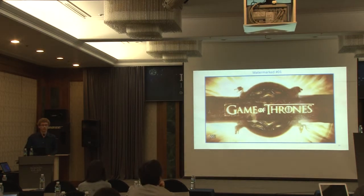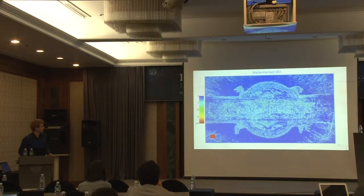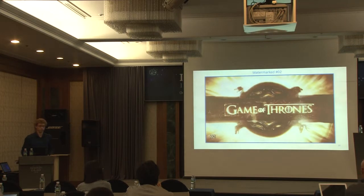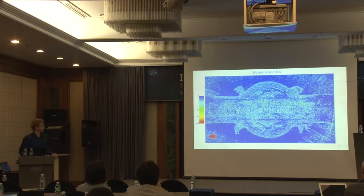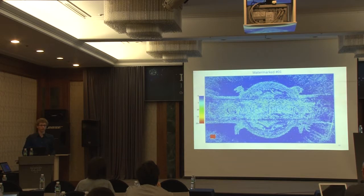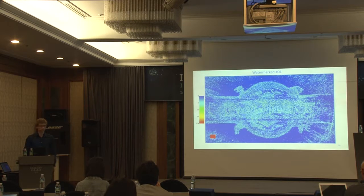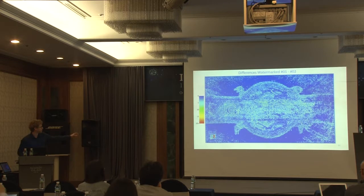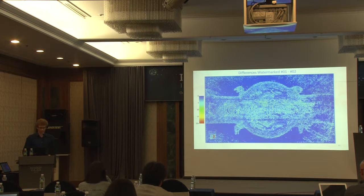Moreover, if we have watermark number 01, we have certain compression artifacts. And if we have watermark number 02, we have, again, certain compression artifacts. But these compression artifacts are different. So each unique visible watermark will create a unique alternative watermark as compression artifacts. This is a visualization of the differences, and the main difference you can see is the '1' and '2' overlapping in the lower left corner, but there are also many differences around the edges.